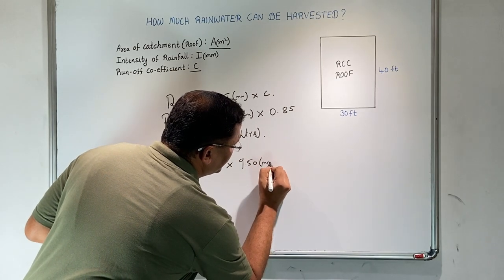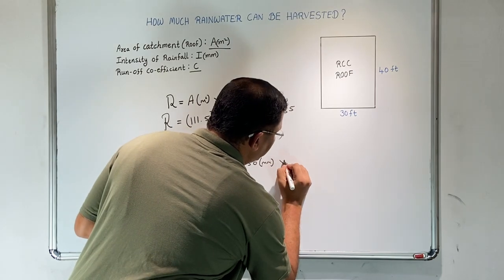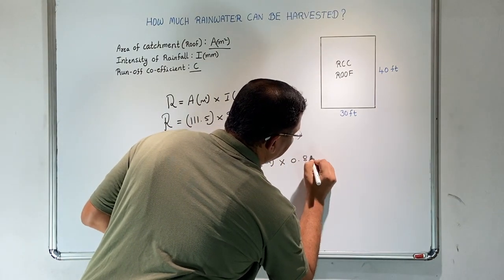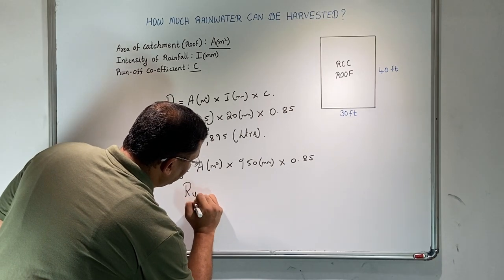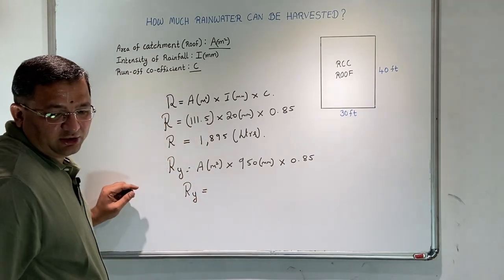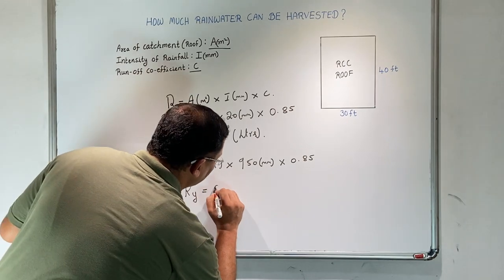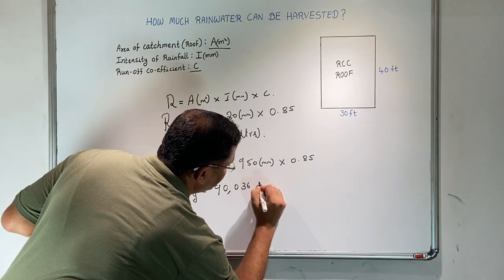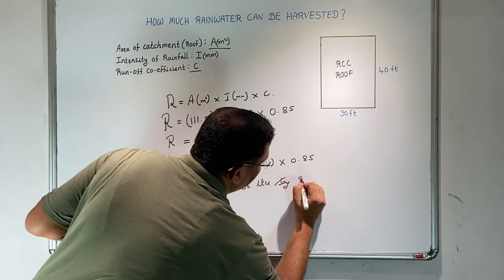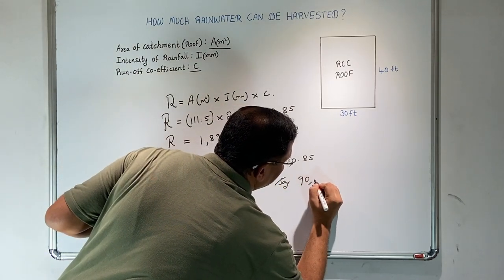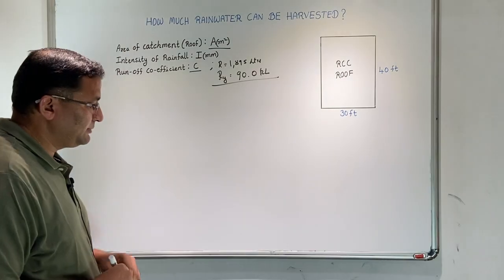This is the average over the course of the last century. For the coefficient, let us say 0.85. If we do that, we get the yearly rainfall to be equivalent to 90,000 liters or 90 kiloliters.